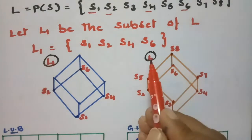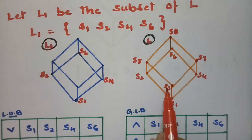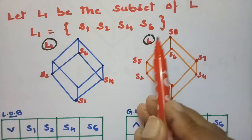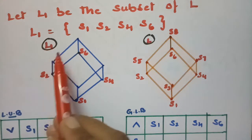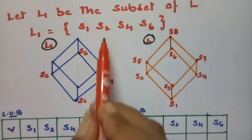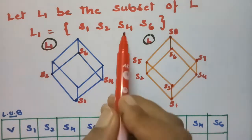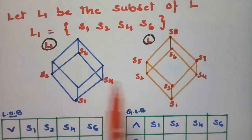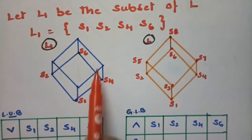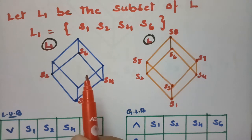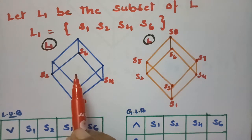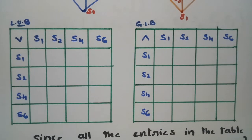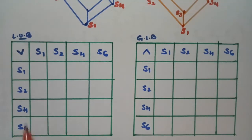This is the main lattice L with elements S1 through S8. Out of this main set I have taken a subset L1 with four elements: S1, S2, S4, and S6, plotted at their respective positions in the diagram. To prove it is a sublattice, it must satisfy the closure property under both join and meet operations.